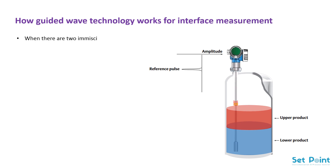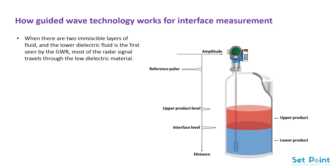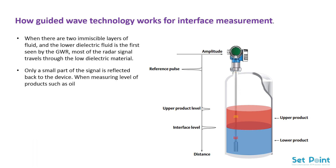When there are two immiscible layers of fluid and the lower dielectric fluid is the first seen by the guided wave radar, most of the radar signal travels through the low dielectric material. Only a small part of the signal is reflected back to the device. When measuring the level of products such as oil with a dielectric of two, less than five percent of the signal is reflected back to the transmitter.